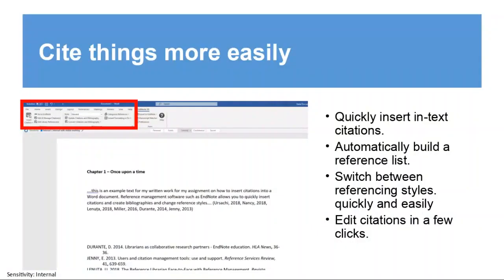A big selling point of EndNote is that it syncs up with Word and can do your referencing for you. However, if you're not already familiar with referencing, we wouldn't recommend using EndNote at first. We have a really useful tool called Cite Them Right that we'd recommend using first, as it teaches you the principles of referencing. But if you are familiar with it, EndNote can save you lots of time and lets you switch between referencing styles — such as APA or Harvard — with the click of a button.